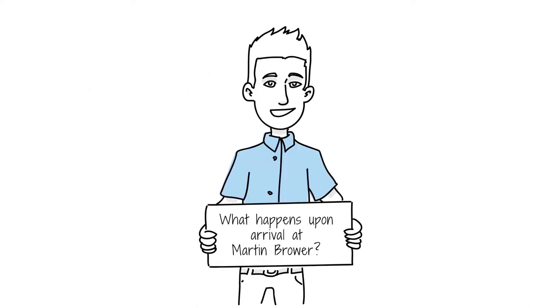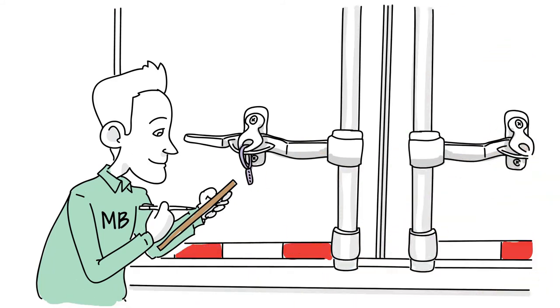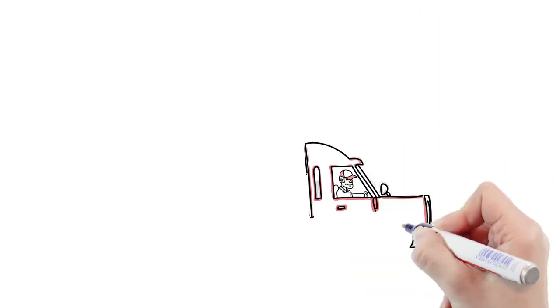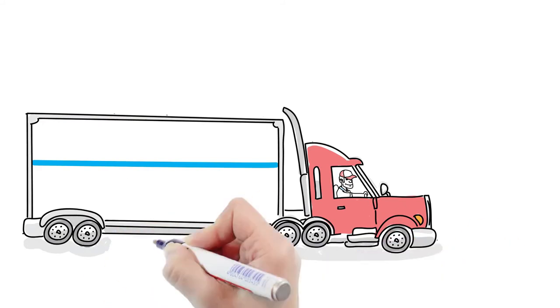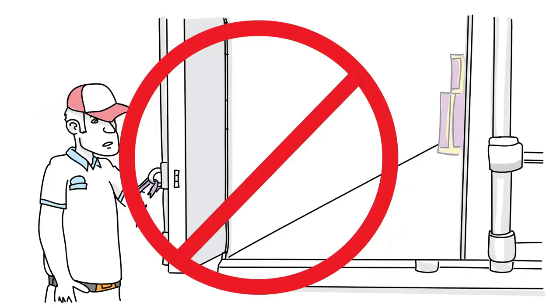What happens upon arrival? On arrival at a Martin Brower location, a seal can only be broken by Martin Brower UK Limited after the unique trailer seal numbers have been cross-checked and verified against the shipping documentation. If a seal has not been verified in this manner, then the load will be treated as non-conforming.